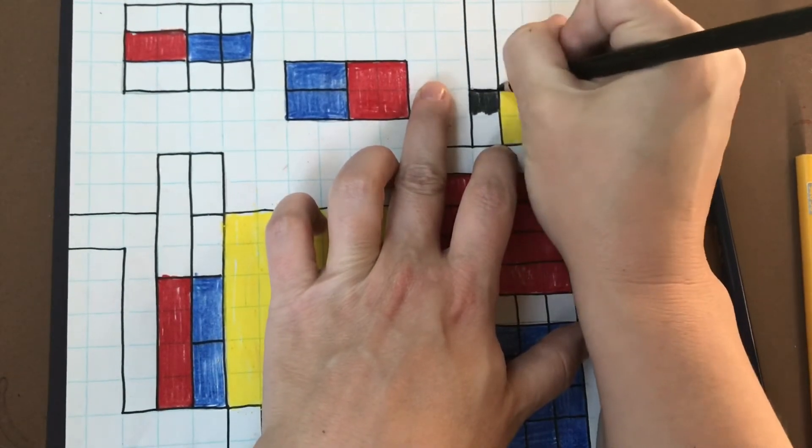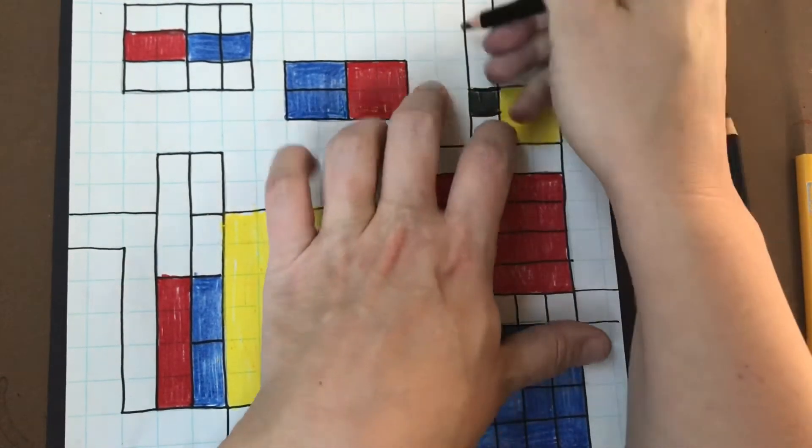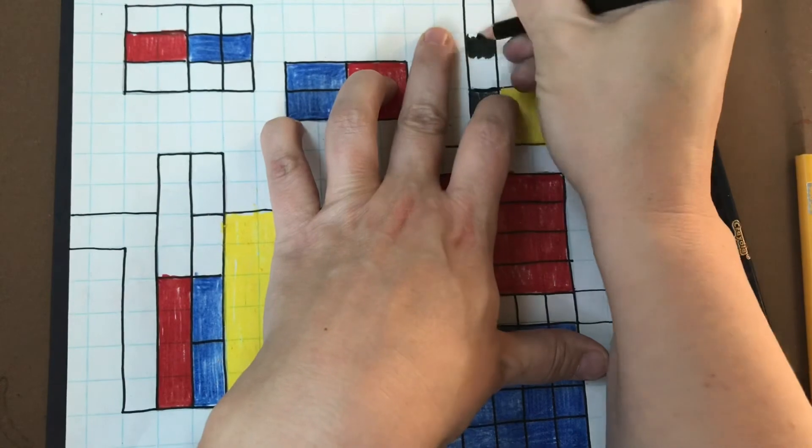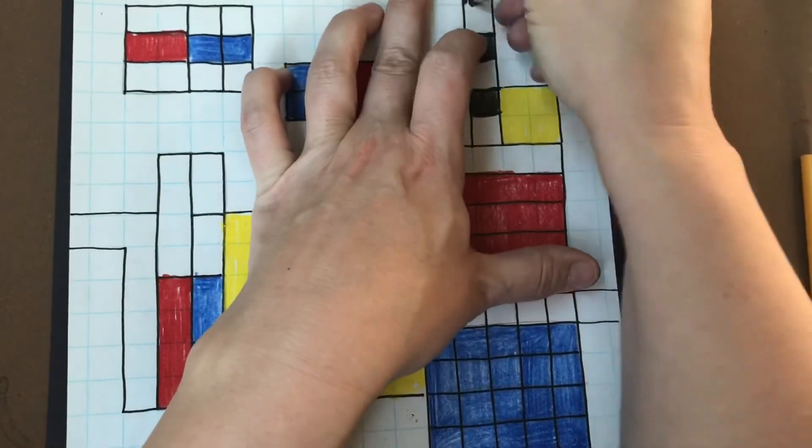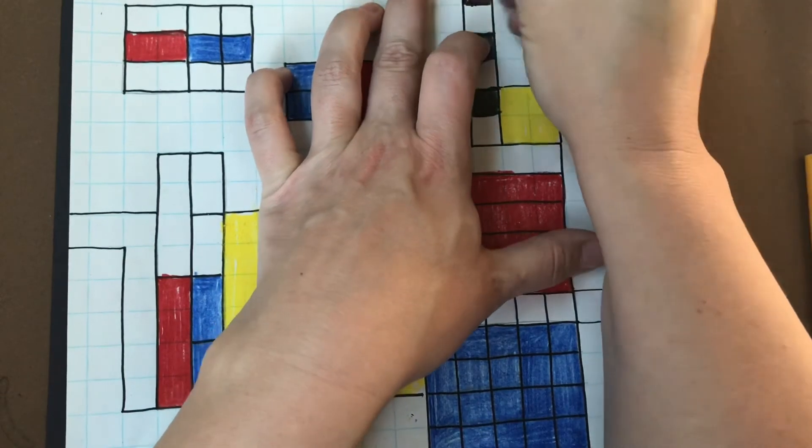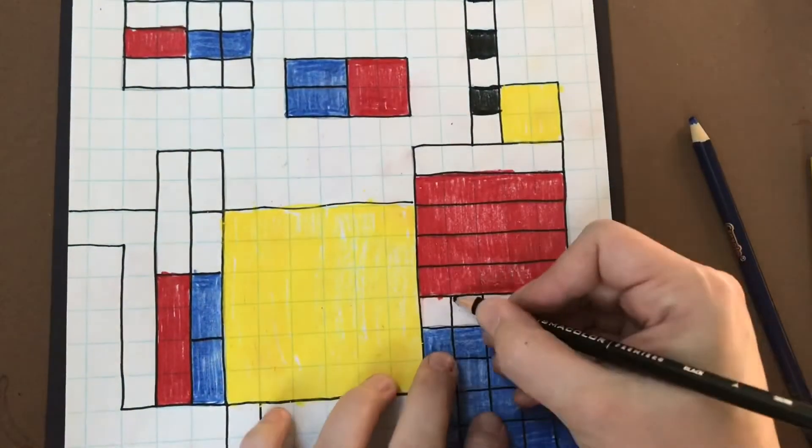And don't forget you can use some black to color in your squares. When I'm coloring with colored pencil or marker, I try and color in one direction and then fill in the edges a little bit with the tip of my pencil.